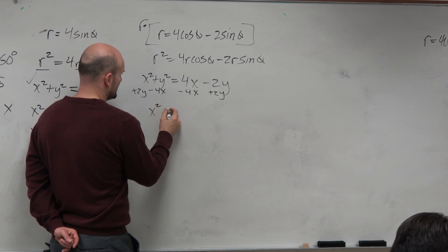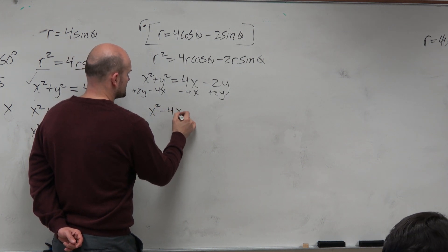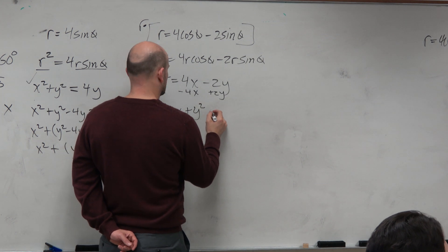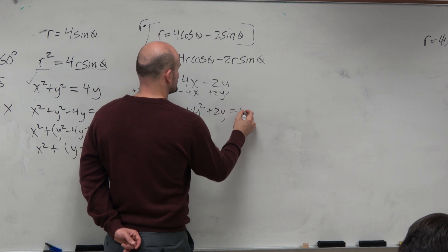Therefore, you have x squared minus 4x plus y squared plus 2y equals 0.